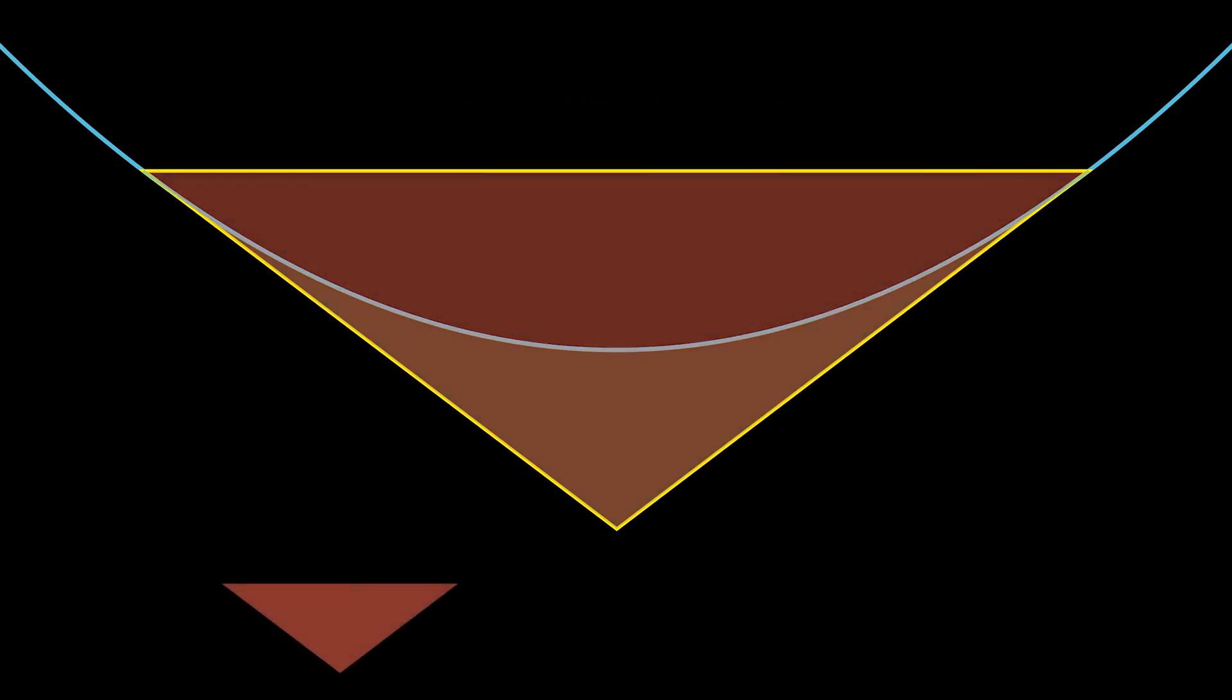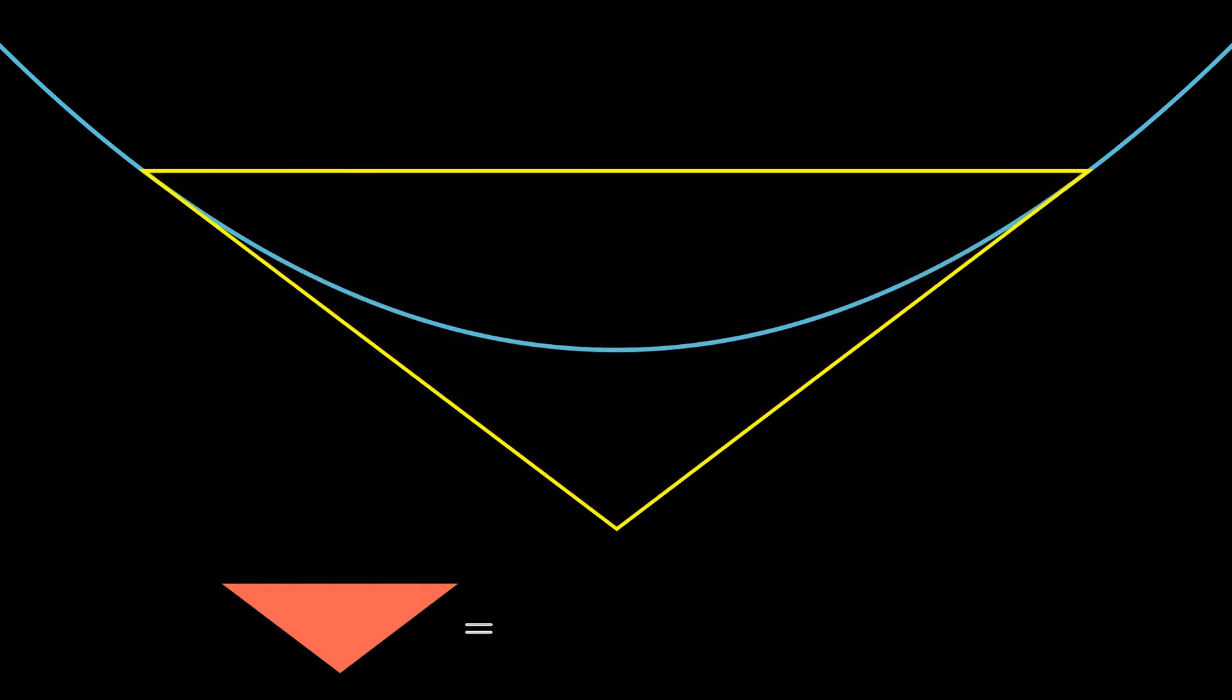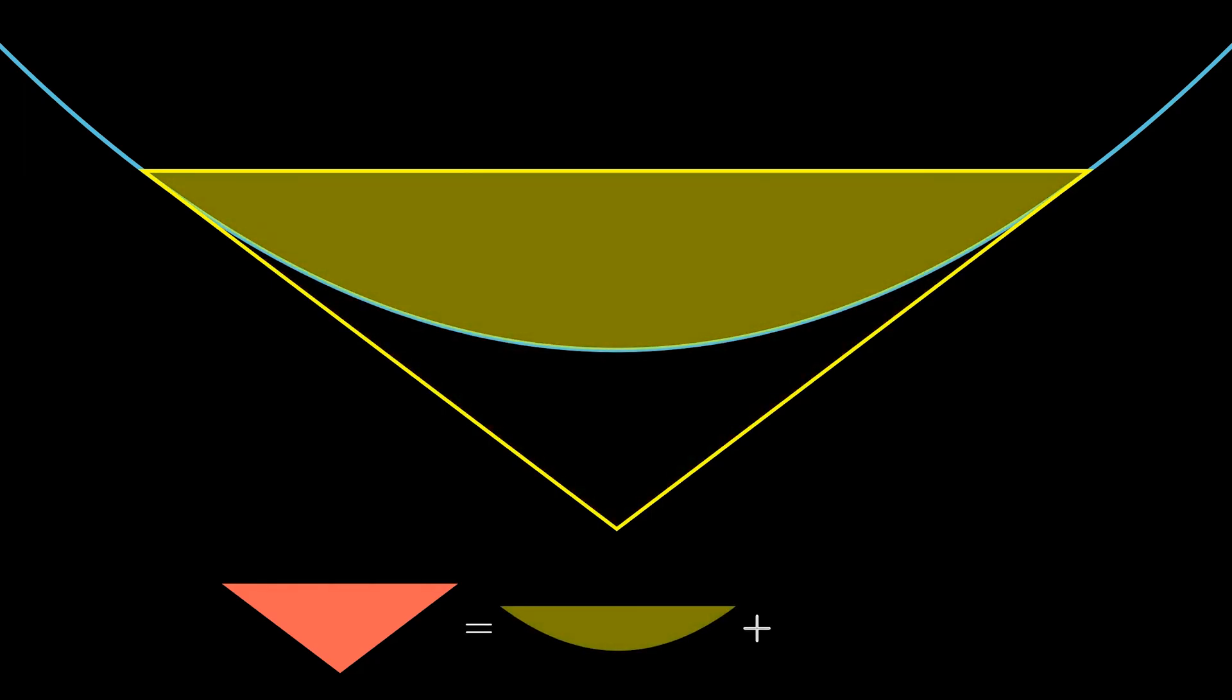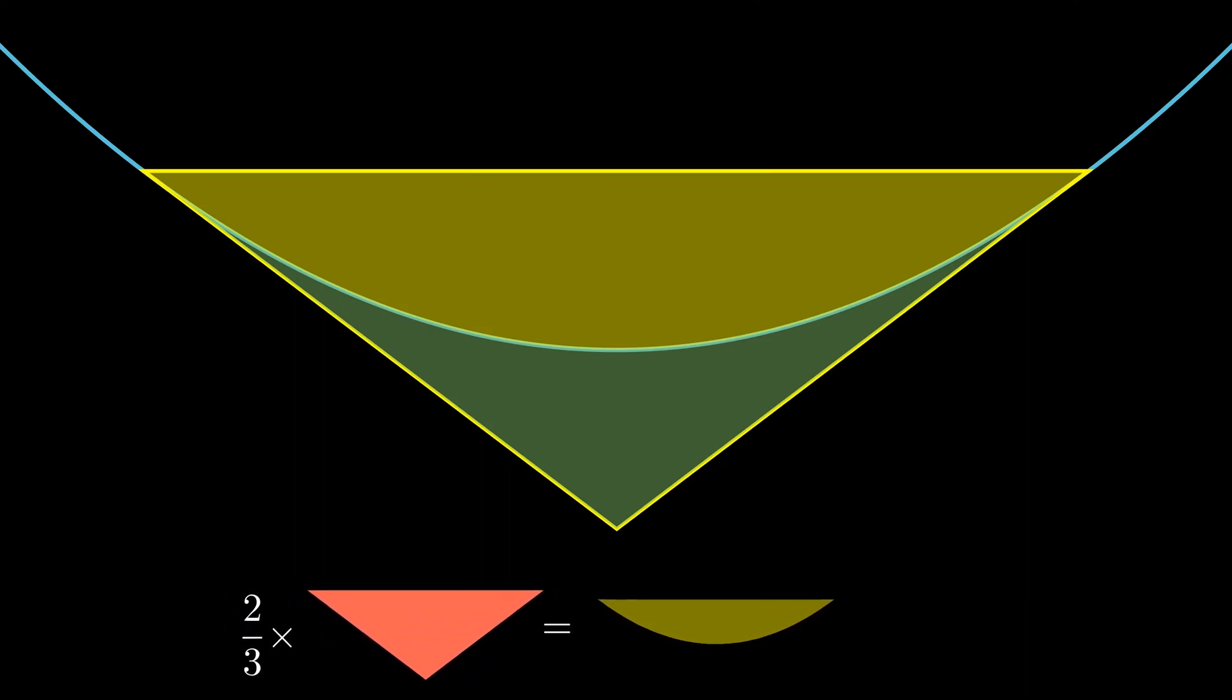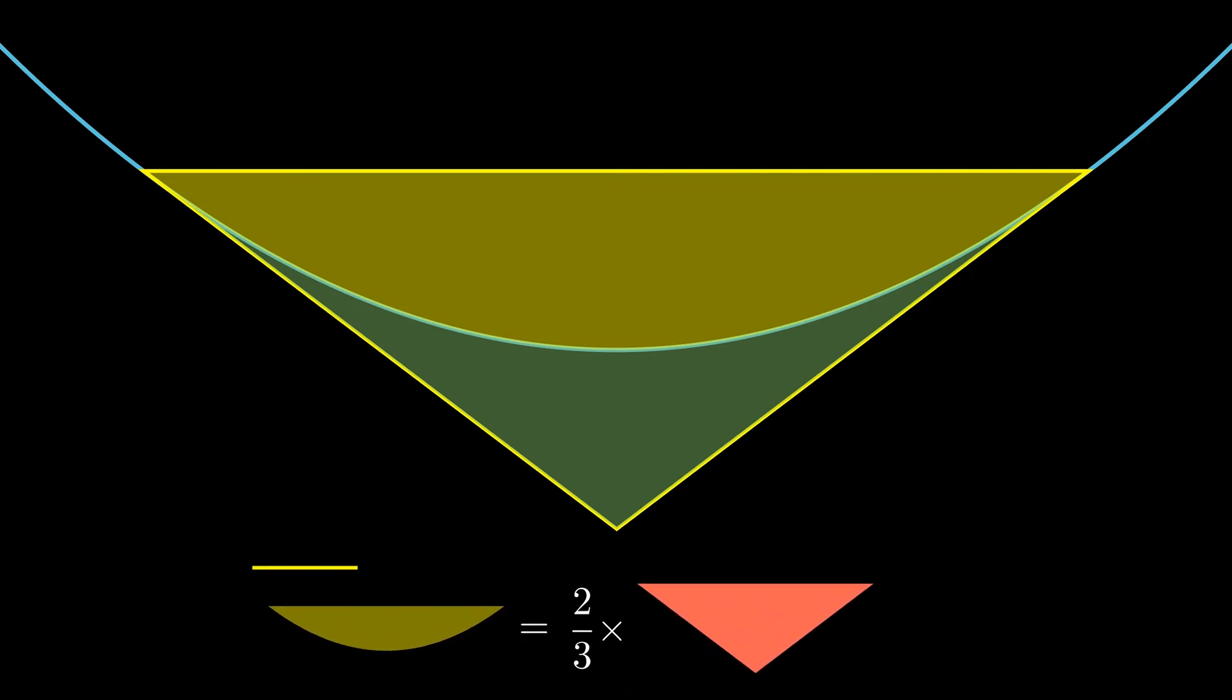We know that the Archimedes triangle PBA is the sum of this parabolic segment and the remaining part. As we just proved, this remaining area is half of the parabolic segment. Adding and rearranging the equation, we arrive at the answer. That is, the area of the parabolic segment is equal to two-thirds of the Archimedes triangle PBA.